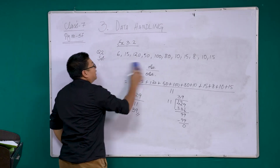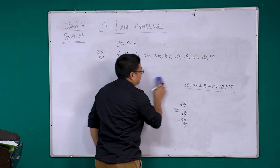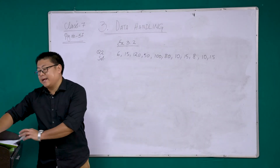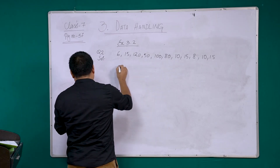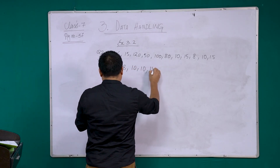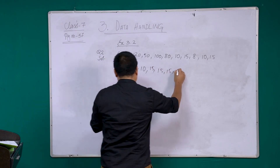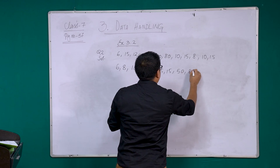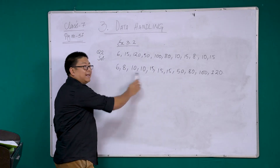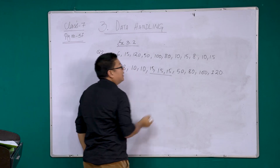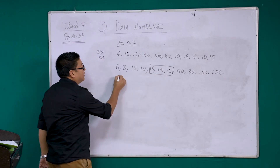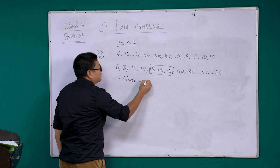Next is to find mode and median. To find mode, we have to arrange these numbers in ascending order: 6, 8, 10 (2 times), 15 (3 times), 50, 80, 100, 120. If you look at this data, you can see that 15 is the only number that is repeating 3 times — the highest frequency. Therefore, your mode is 15.